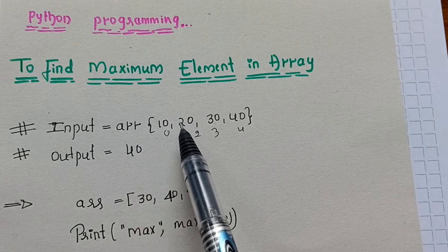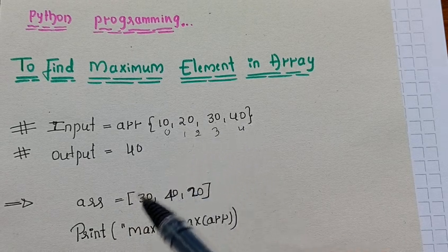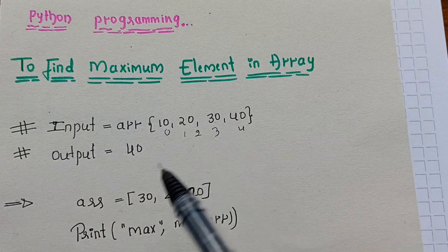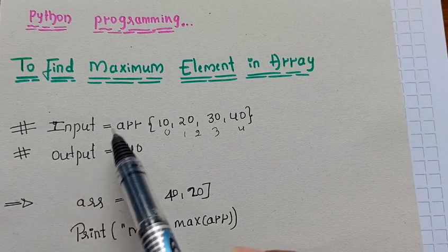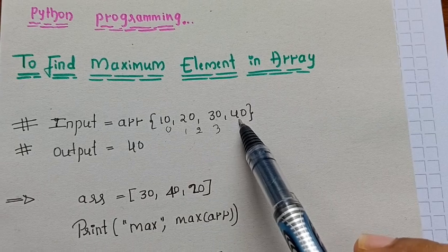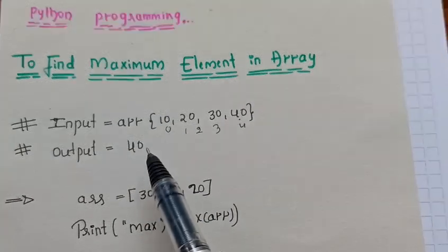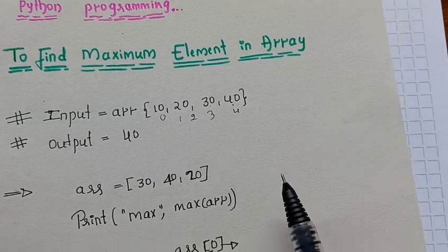A is equal to 10, 20, 30, 40 - it depends on your choice. The output is equal to 40. Now I am going to start the program.